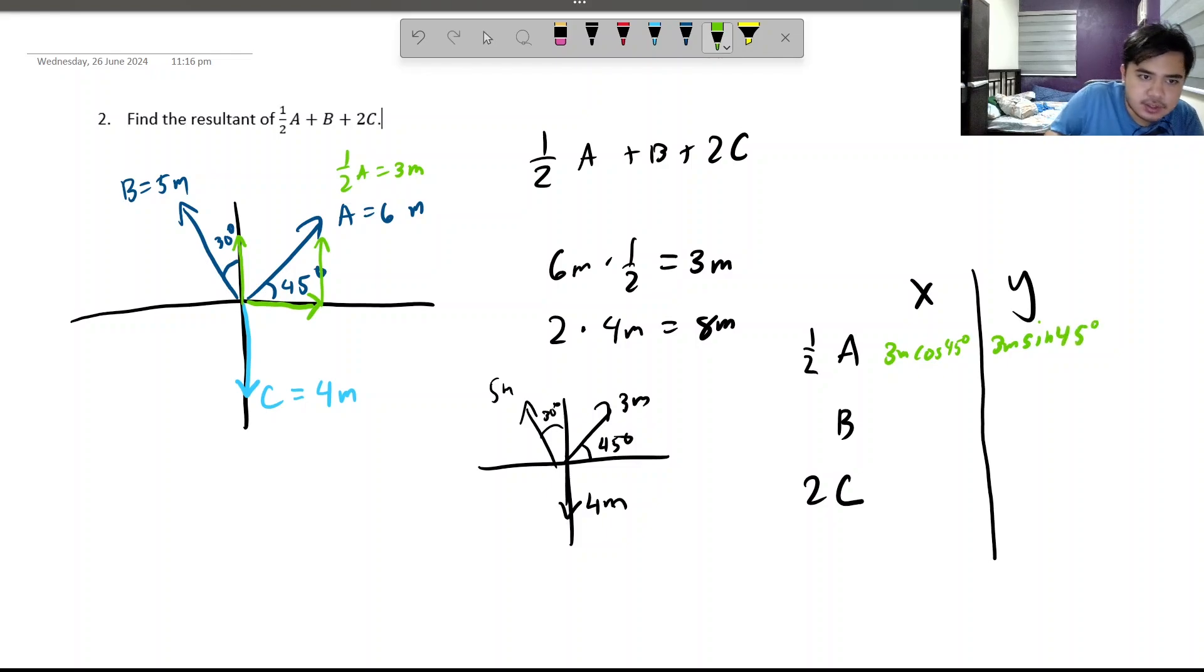For B, it is 5 meters, but it goes to the west. So, it's negative 5 meters. And then, we have to find the sine of 30, since it is opposite. And then, for the other one, it's going north. So, it's also positive. It's positive this time. So, this is 5 meters cosine of 30 degrees. And then, for the south, it's going down. So, it's only negative 8 meters here and then 0 meters here, since it's not going to the left or right.